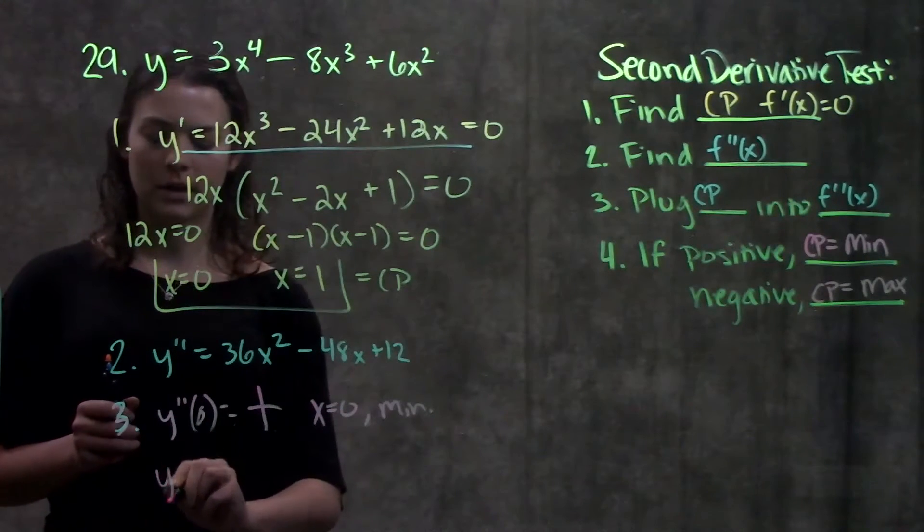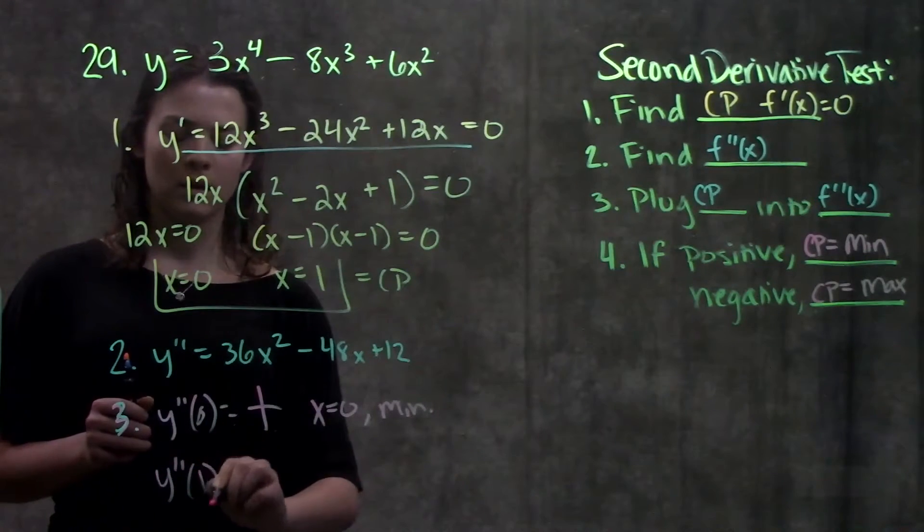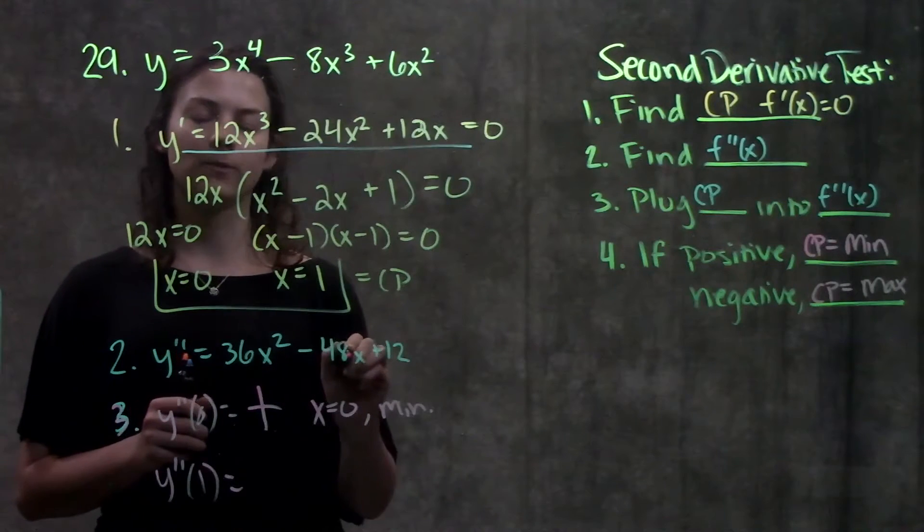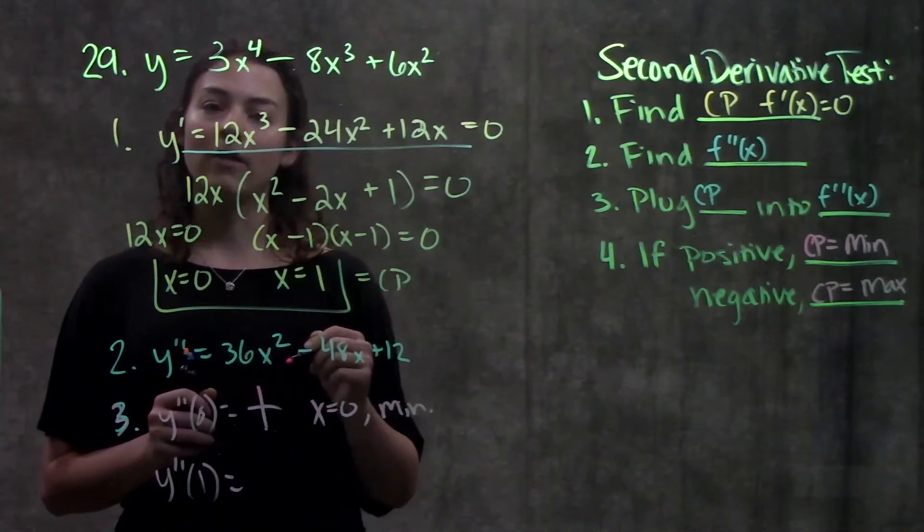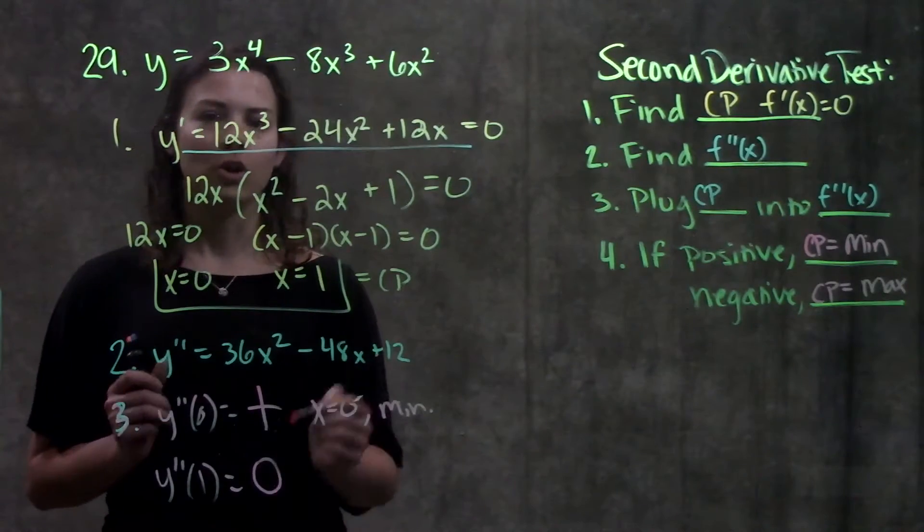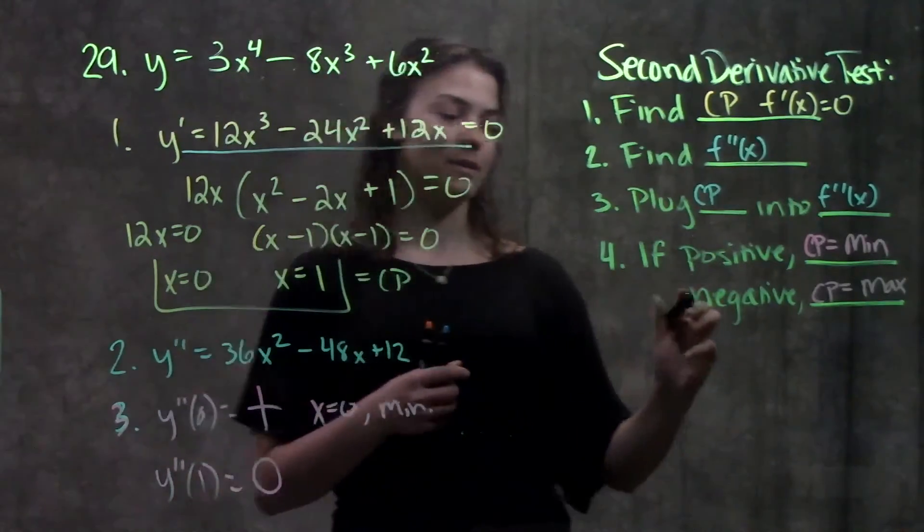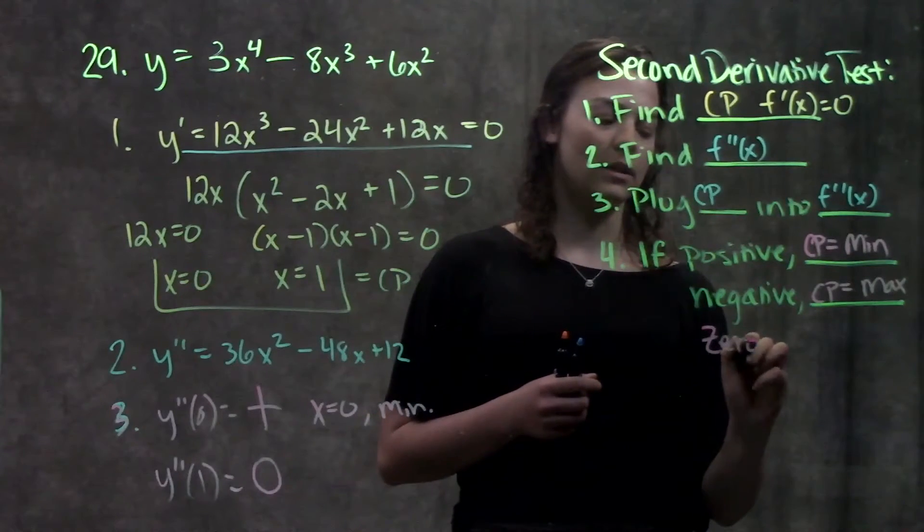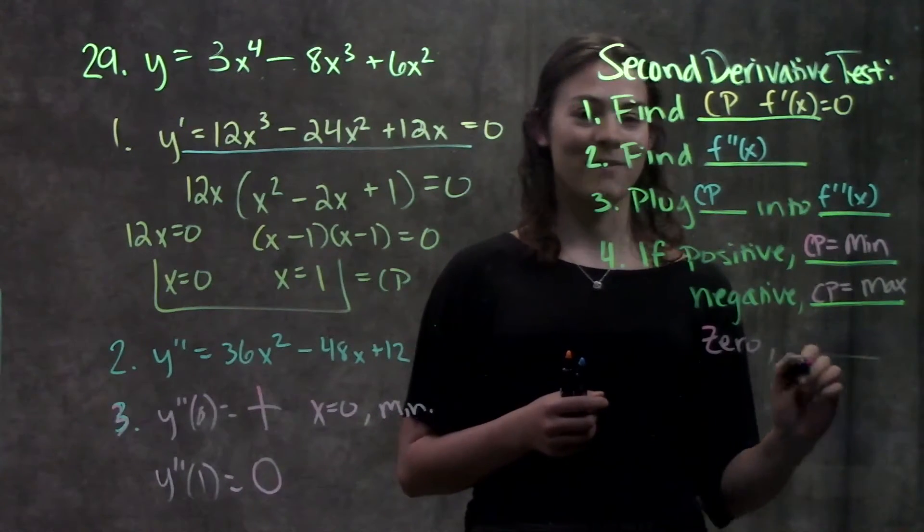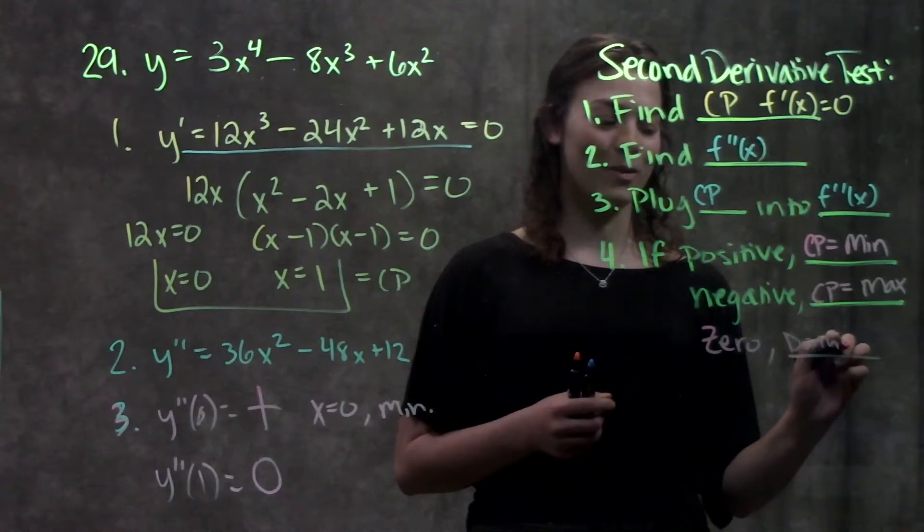And when we plug in our second critical point, which is one, we get 36 minus 48 plus 12. Add all that together, you're actually going to end up getting zero, which is weird, right? Zero isn't positive or negative. It means we need to add a third line here. If you get zero, that means, our favorite words, do more work.